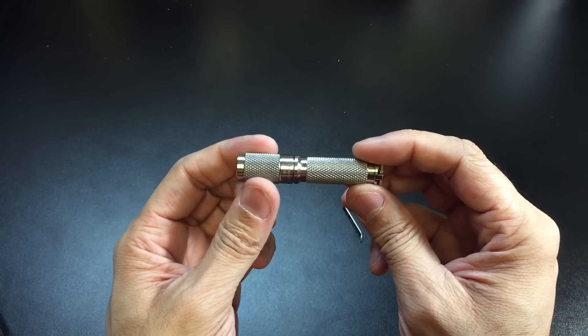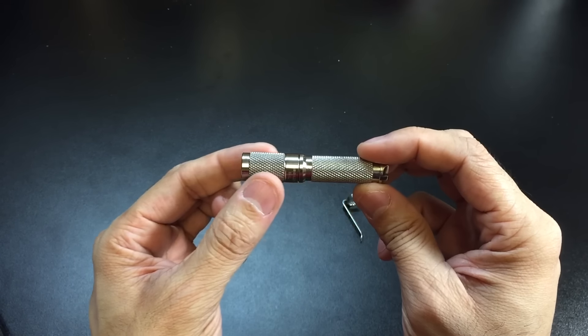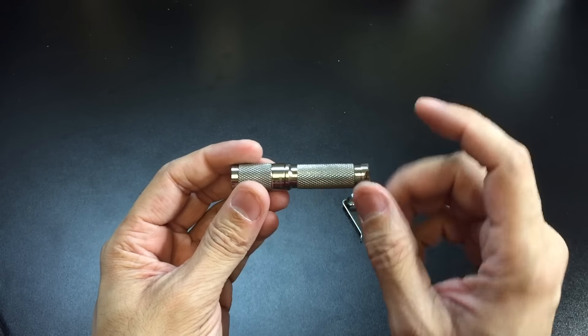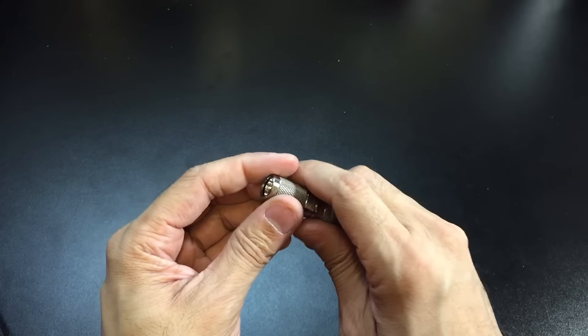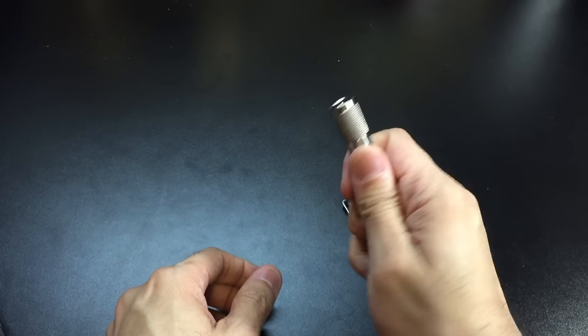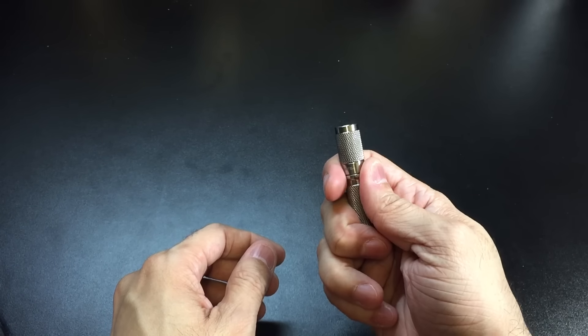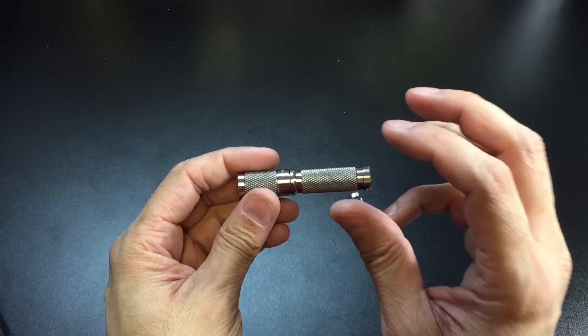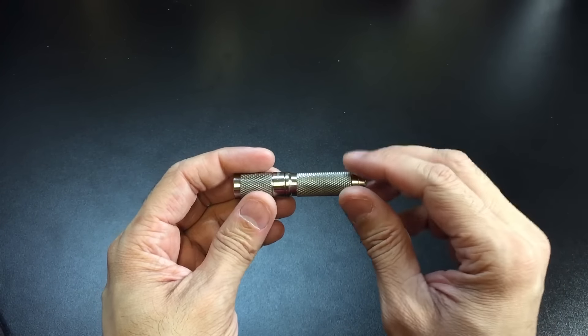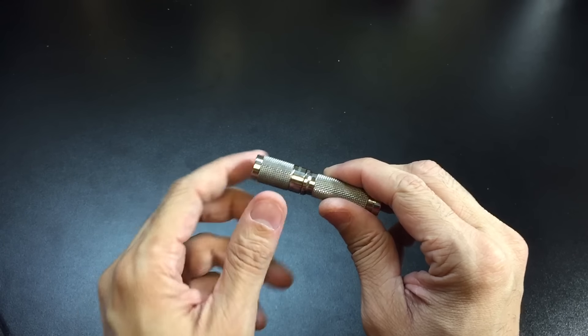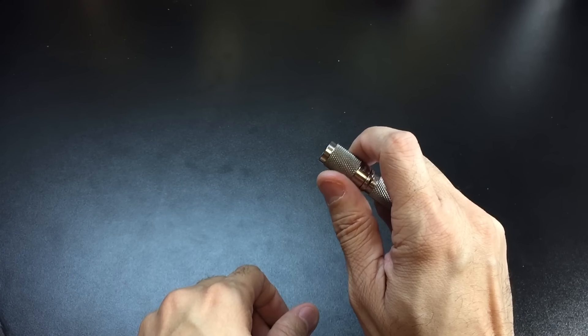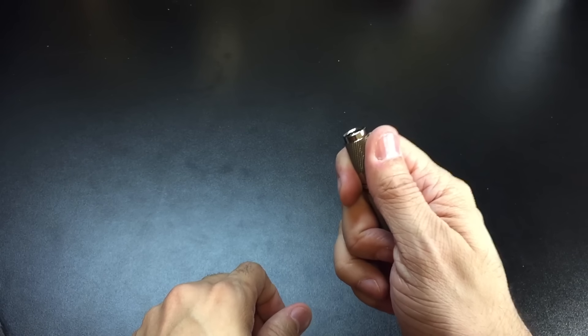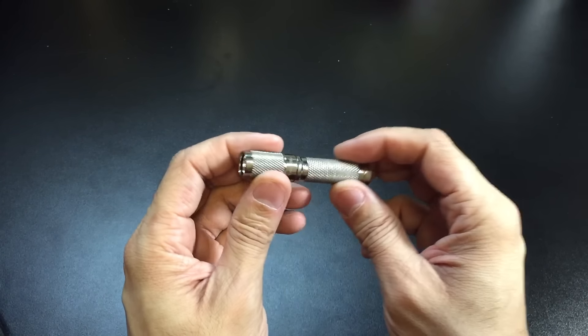So you have some really nice knurling throughout the body of the flashlight here. And it is very functional because it serves two purposes. The back part right here actually serves to grip the light onto your hand as you're holding it. And that's really important because it's small, it's lightweight, you don't want it to fall out of your hands. Then the knurling on the head right here actually allows you to activate the different modes on the light without having to use two hands if you want to just use one hand. So that's really cool also.